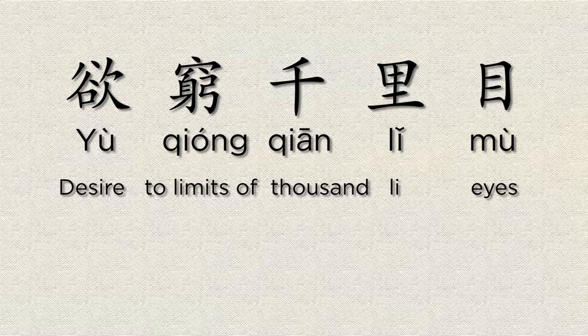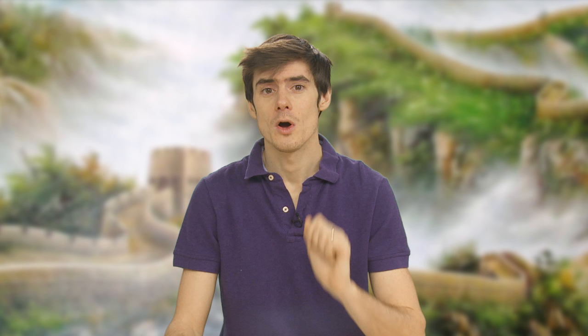欲 means to desire. 欲 is another character that is similar to 盡. In this context it means to go to the limits of. 千里 is 1000 li, a Chinese unit of measurement equal to about half a kilometer in modern terms, although its length has changed throughout history — in the Tang Dynasty it was equal to maybe a bit over 300 meters. 目 means eye or eyes. So the whole line reads: to go to the limits of 1000 li eyes. This line doesn't translate so well into English, but you can think of it as the poet desires to see as far as he can.